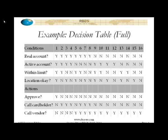For example, if there were three possible values for active account — yes, no, and maybe, assuming it was somewhat indeterminate — then the number of columns would be two to the third power, or eight, times three (three for the active account), which would be 24. Similarly, the pattern would look different: we would have four yeses, four noes, and four maybes, then four yeses, four noes, and four maybes for active account. You just have to be aware of how non-Boolean conditions affect this.